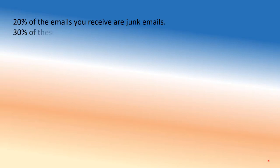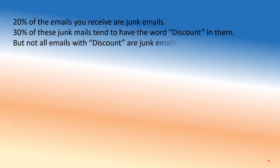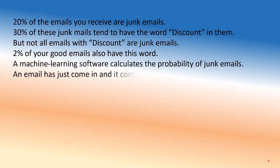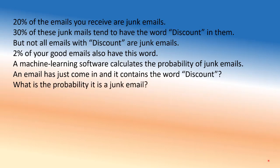The first problem is about machine learning — how to identify junk email. Some emails are junk, and junk mails typically have words like 'discount,' 'sales,' 'deals,' and so on. But not every email with those words is junk, so you can't simply delete every email with 'discount.' How do you find the probability of a good email given it has the word 'discount'? That's what Bayes' theorem is.